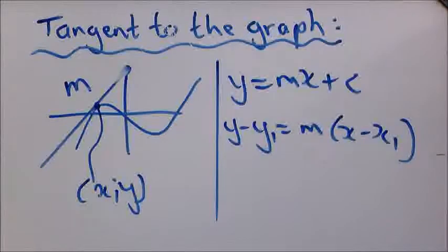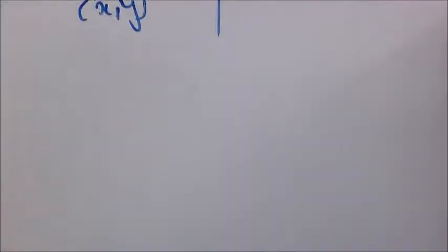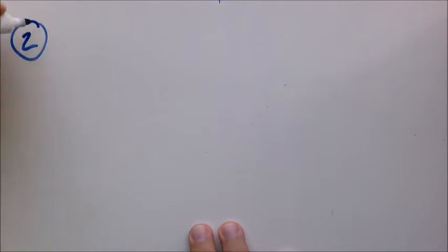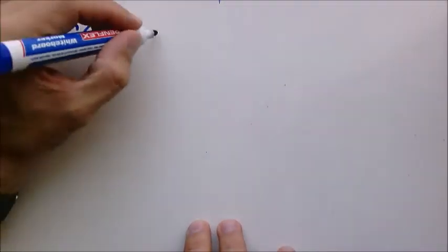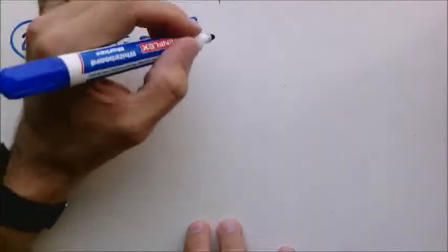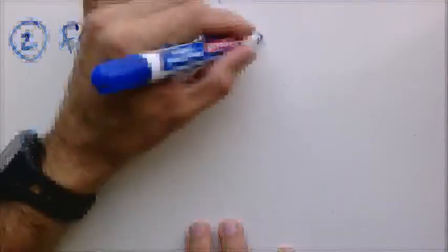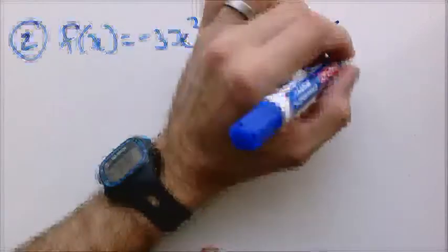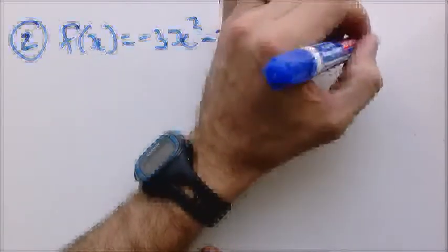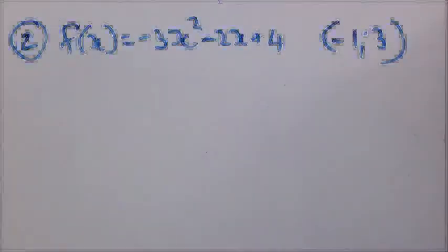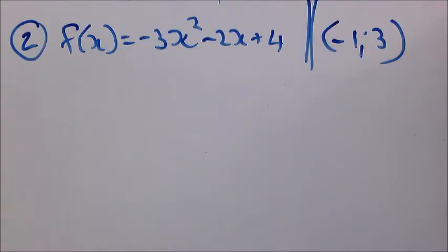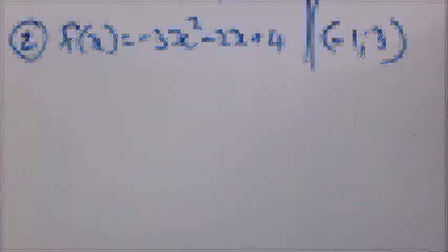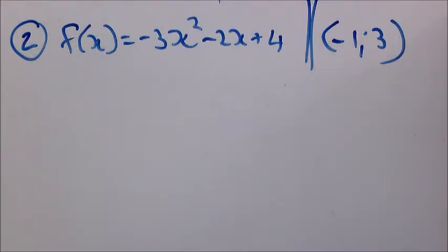So the first one is question number 2. And it says that the function is minus 3X square minus 2X plus 4. And the tangent touches at this coordinate. So negative 1 and 3. So this is life made easy. We already have the coordinate. All we need now is the gradient at that point.